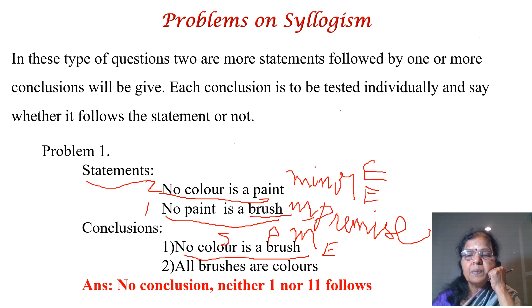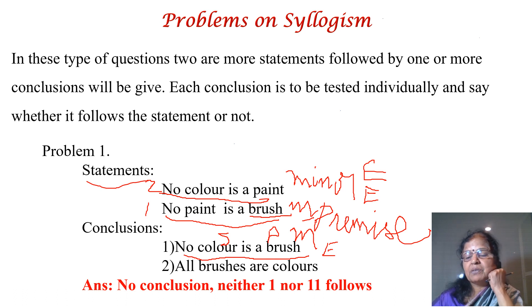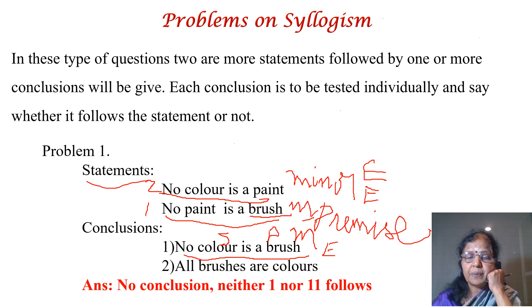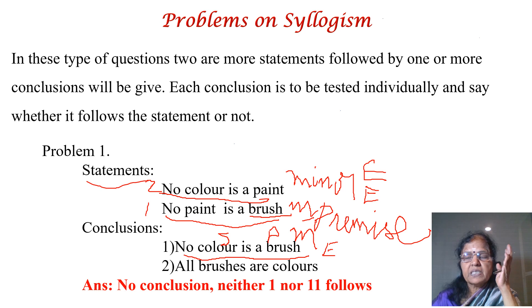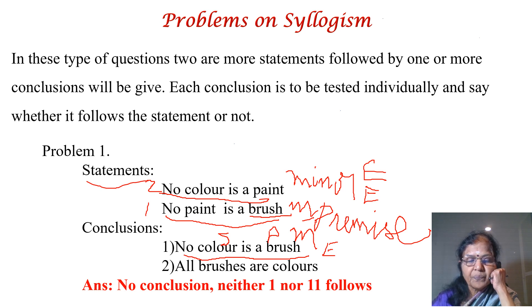E plus E is not in the mediate inference table, which means this combination is invalid. So this conclusion is invalid — not follows. The first conclusion is incorrect. Now, coming to the second conclusion — forget the first one. The same procedure applies for the second conclusion.